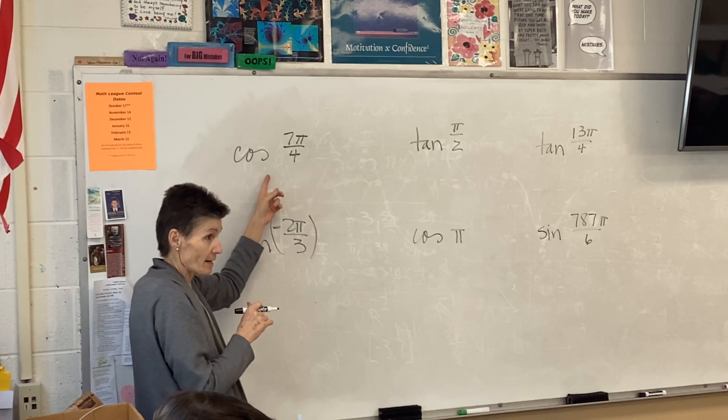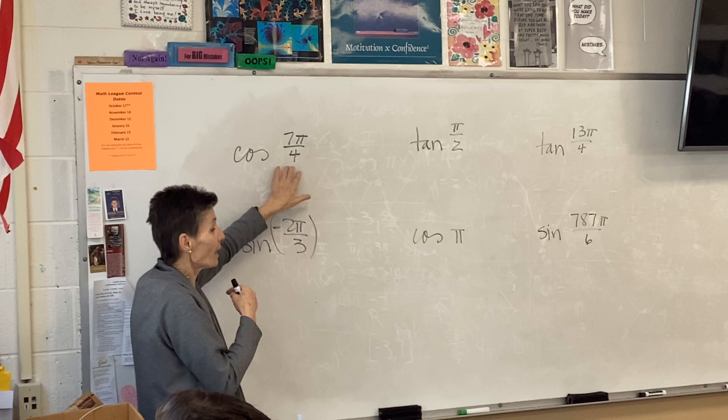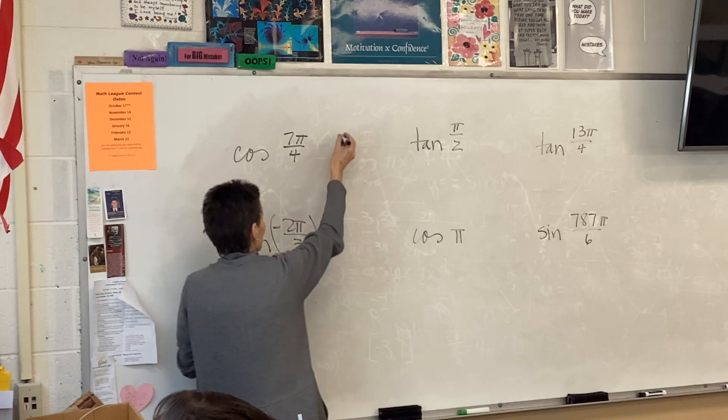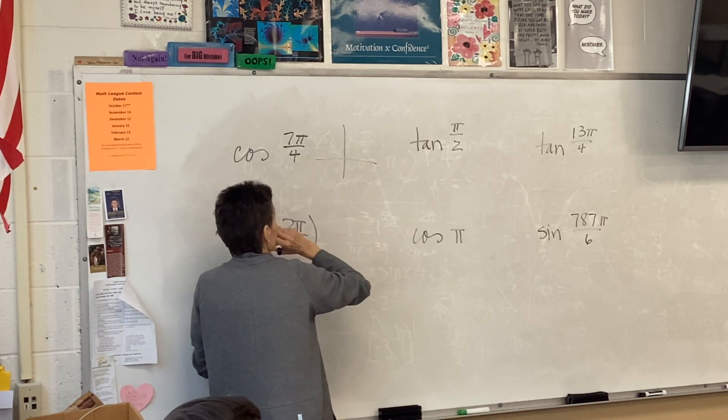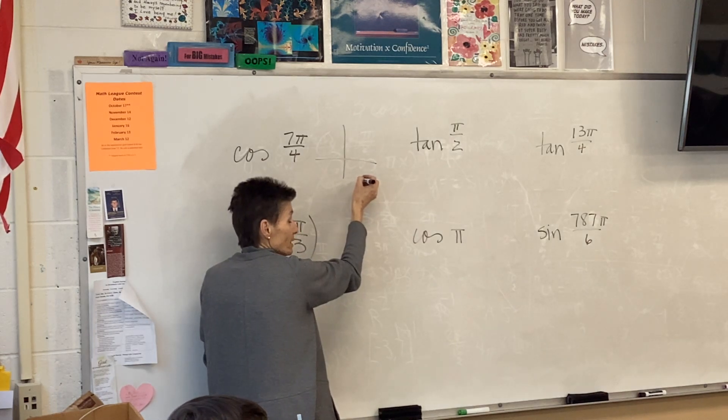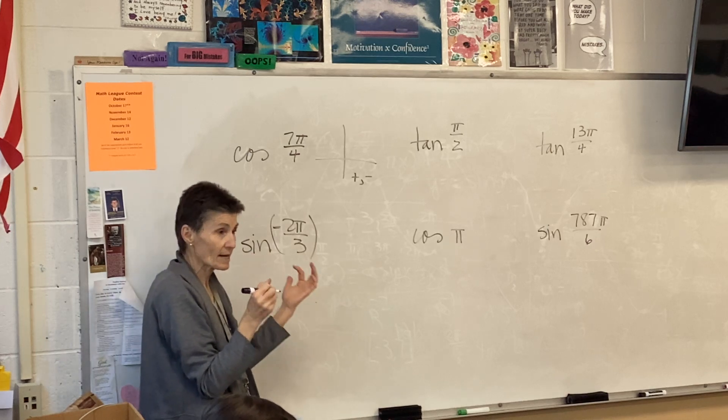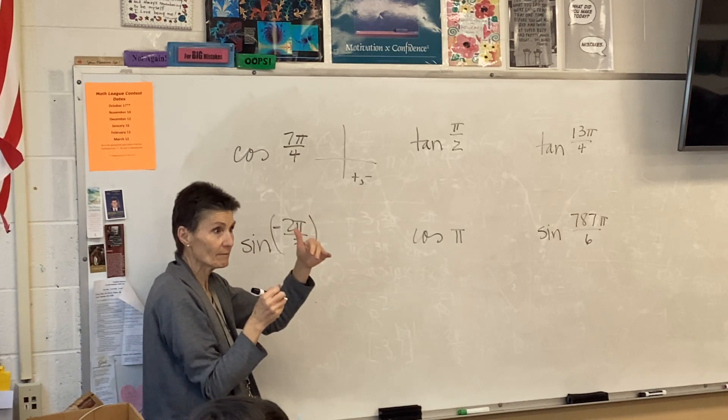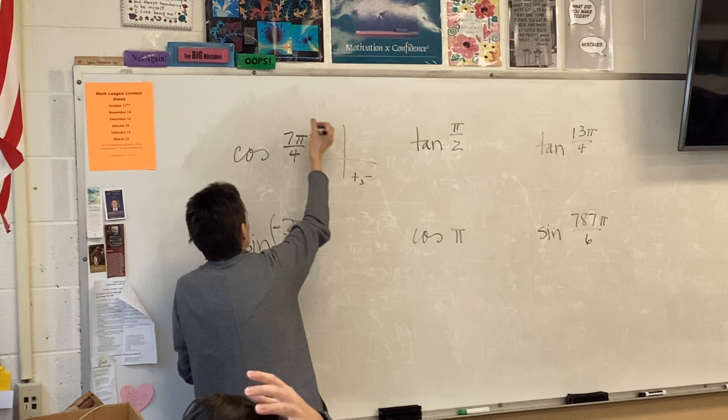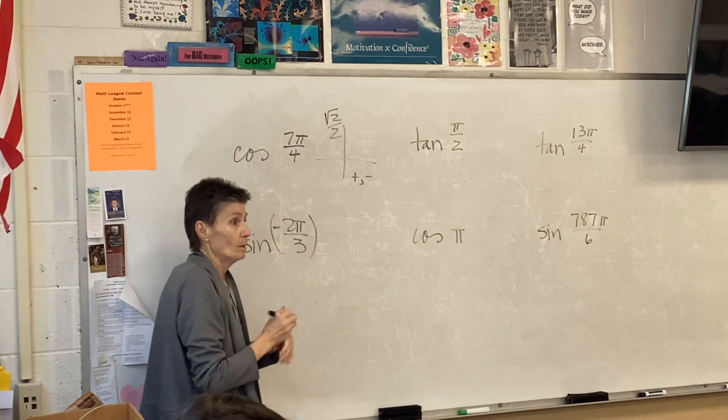This is a cosine, so that will be the x coordinate, but where is 7π over 4? 7π over 4 is down here, right? So in quadrant 4, your signs are positive and negative. Cosine is x. So everybody agree this one is? Perfect.